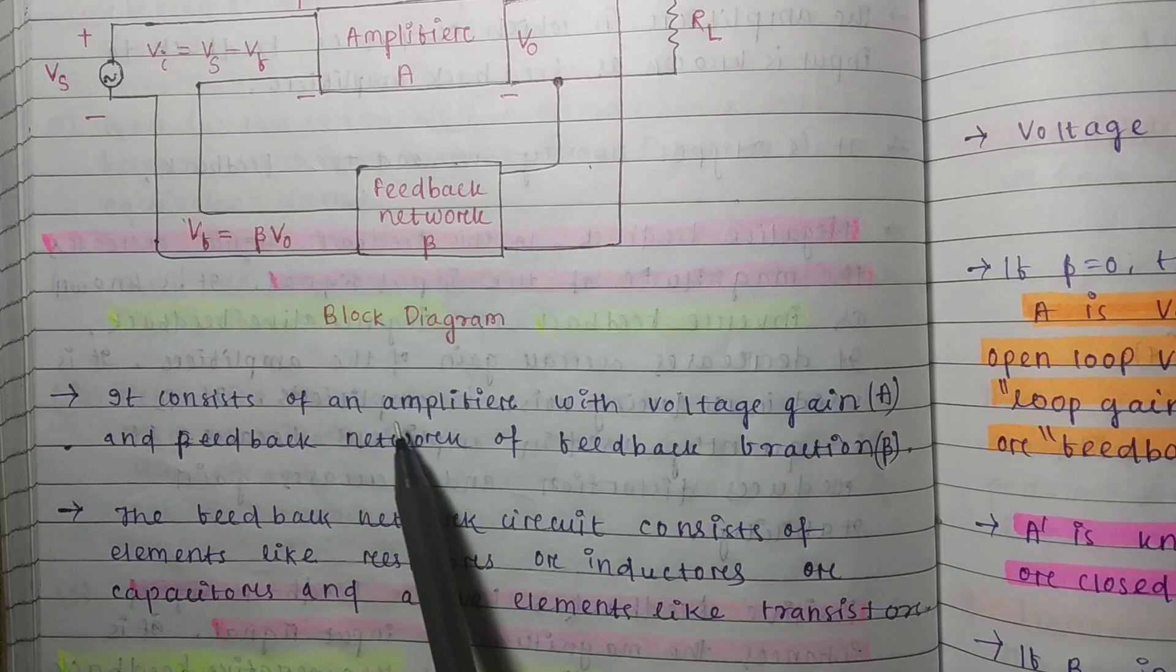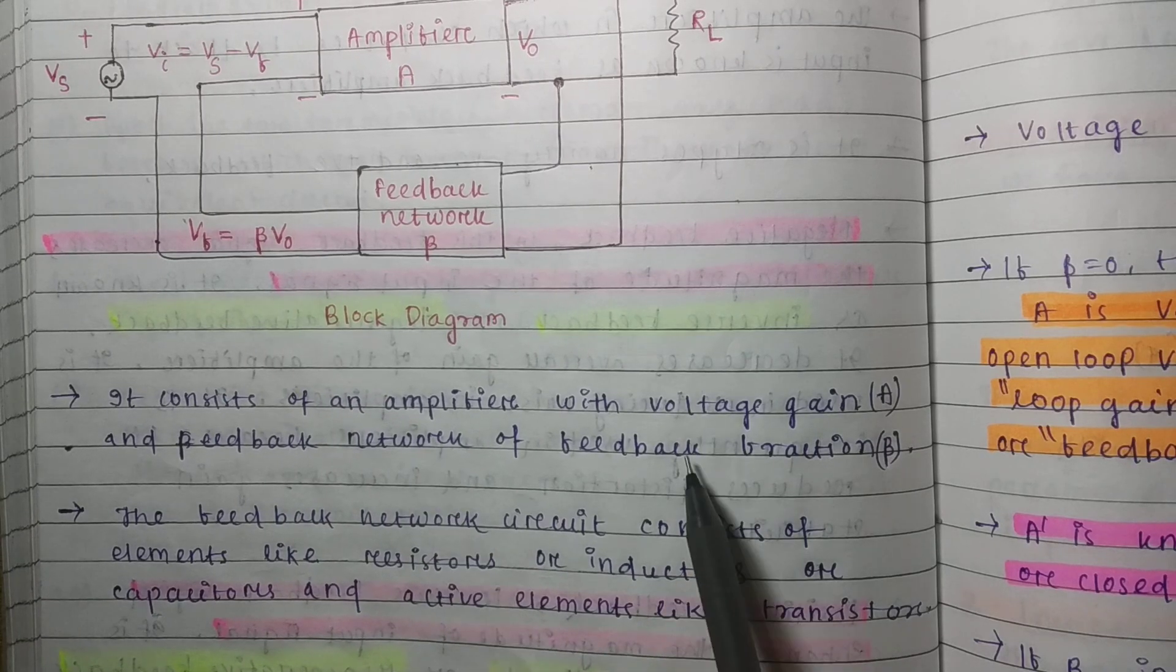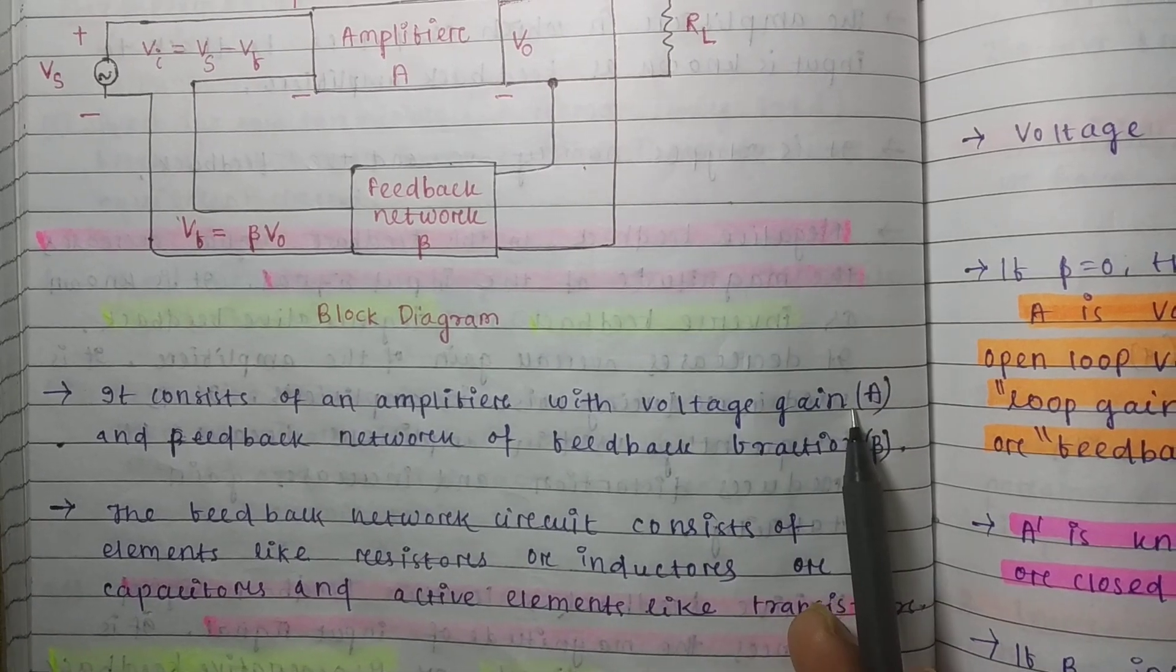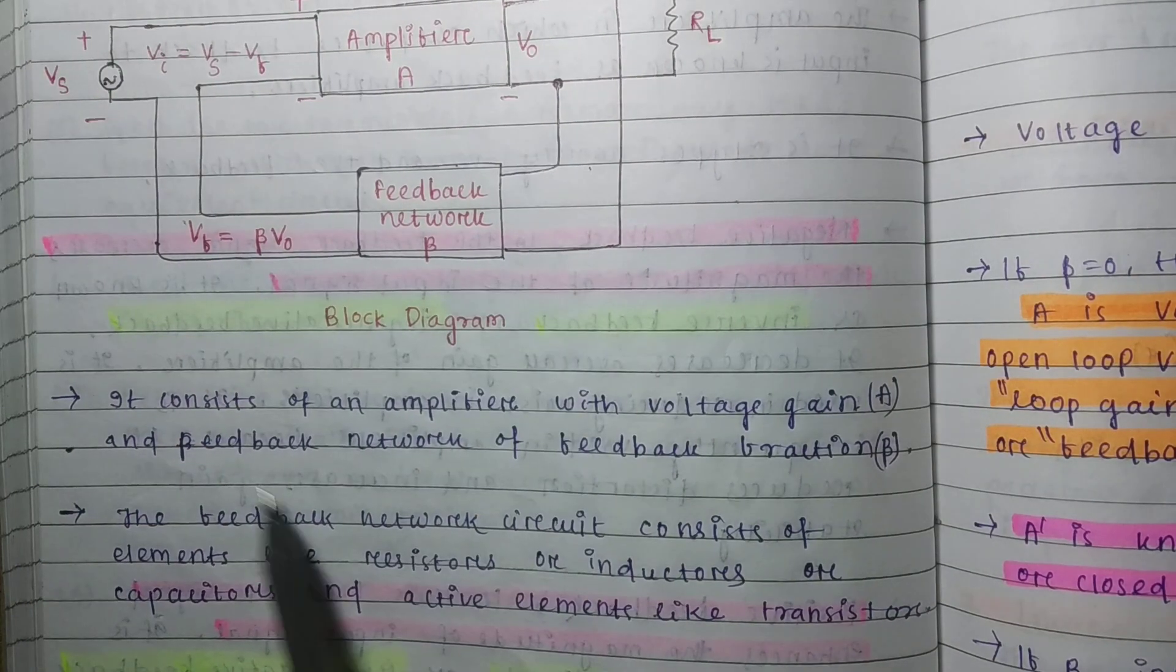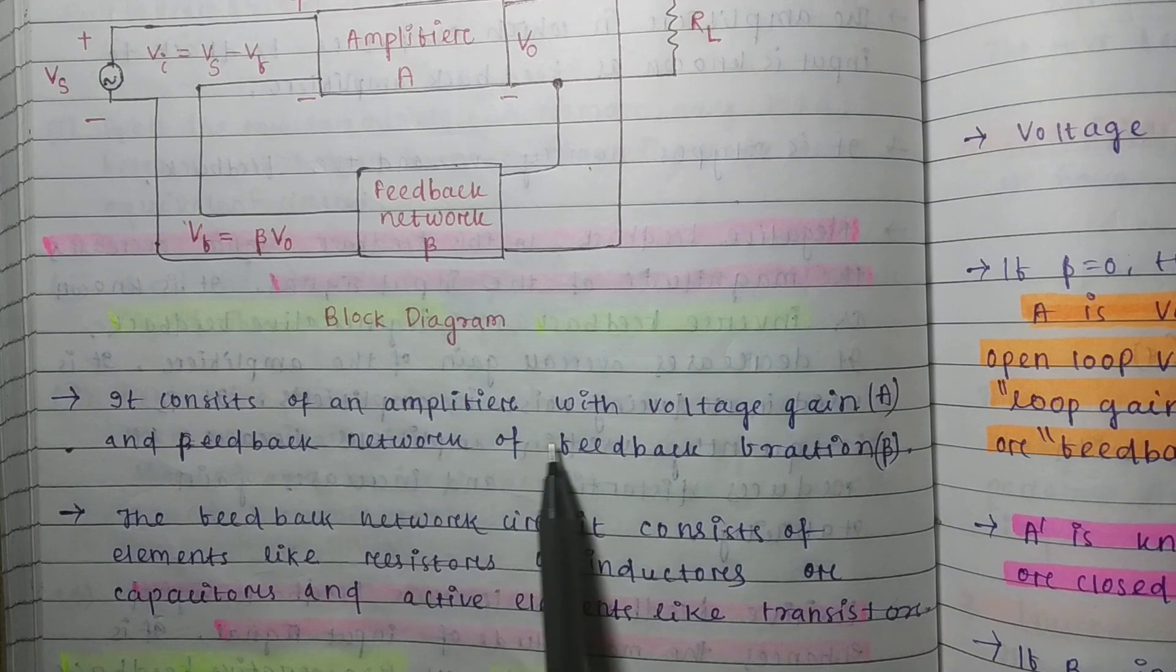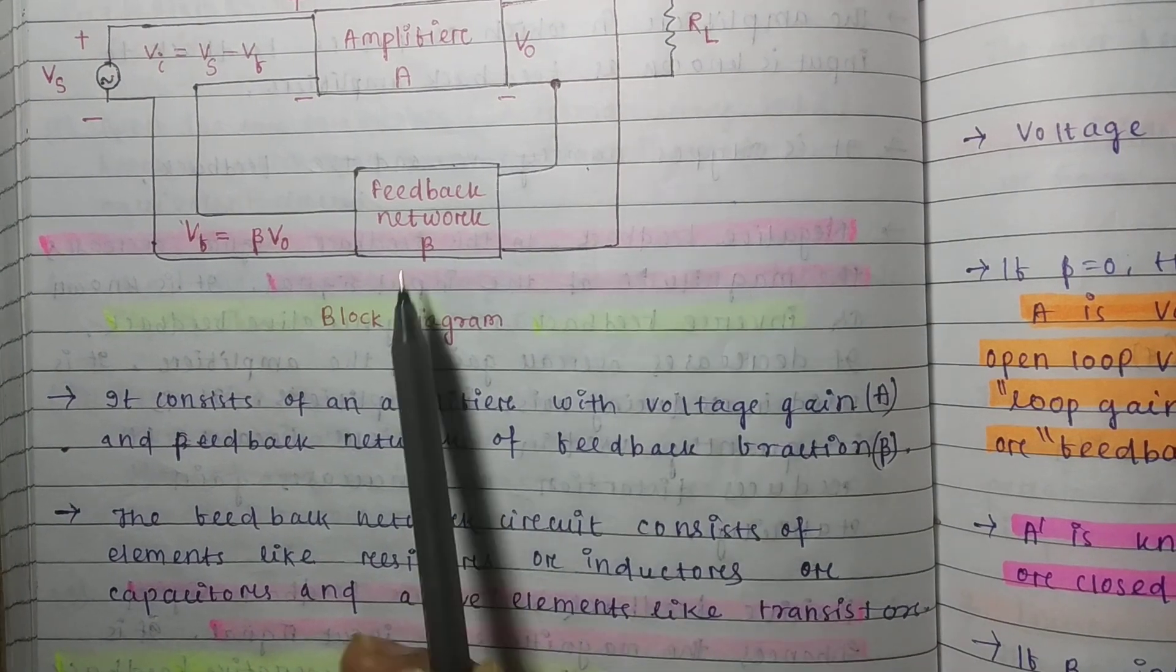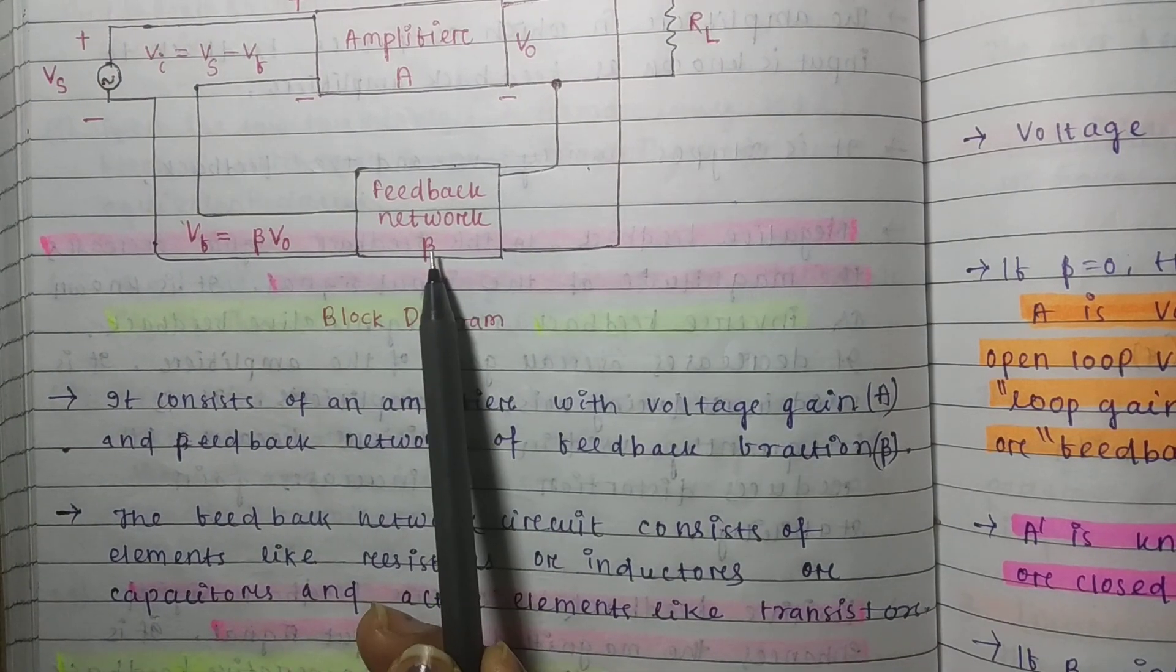It consists of an amplifier with voltage gain A and a feedback network of feedback fraction beta. Beta is the feedback fraction.